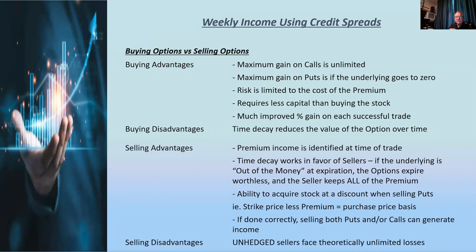What are the risks for buying options? Maximum gains are unlimited if you're buying calls, and gains on puts go all the way to zero if the stock goes to zero. Risk is limited to only the cost of your premium — if the premium was $100, that's all you can lose. If you bought calls on Tesla when it was at $200 and it went to $1,200, you might have only paid $100 for the option. Buying requires less capital than buying the actual stock and improves your percent gain on each successful trade. The disadvantage is that time decay reduces option value over time.